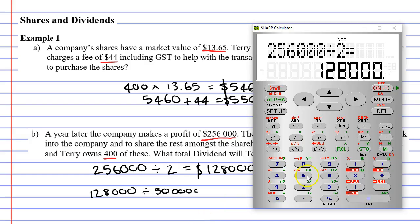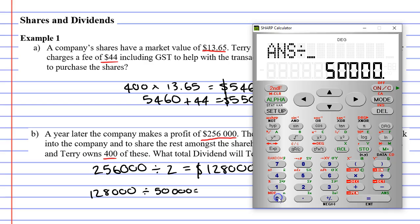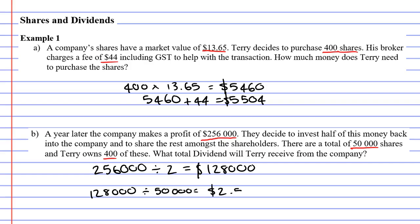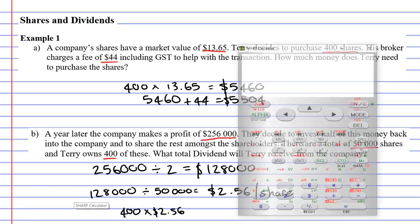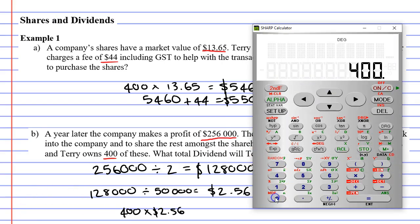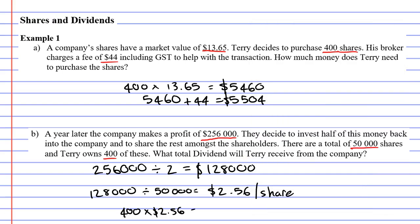128,000 divided by 50,000 equals $2.56, or $2.56 per share. Now, Terry owns 400 of these shares, so we're going to go 400 times $2.56, and we get $1,024. So, Terry will receive a dividend of $1,024.